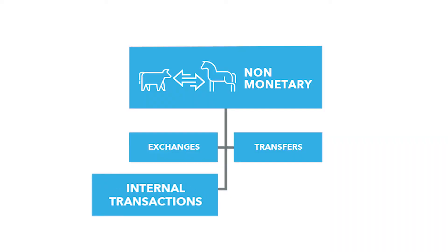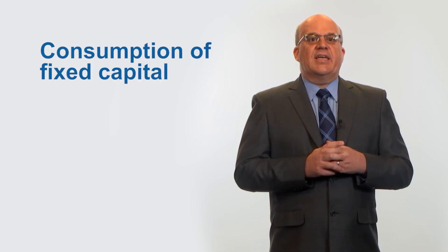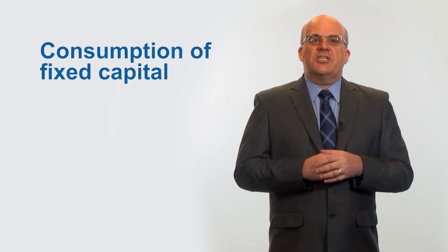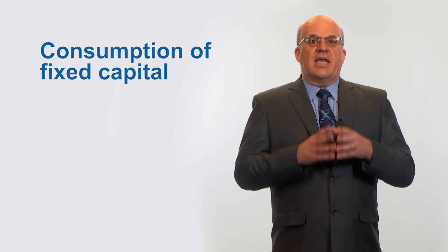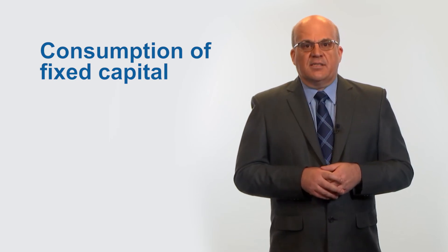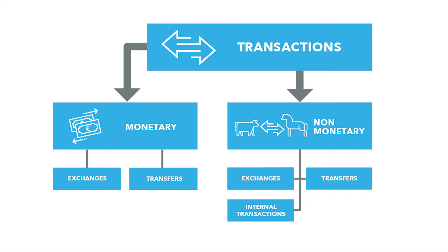Internal transactions occur when a single institutional unit acts in two different capacities, and it is analytically useful to record this act as a transaction. The most common example of an internal transaction is what we call consumption of fixed capital. This entry can be viewed as the macroeconomic version of the depreciation of assets. In this case, the economic owner of the assets acts in two capacities: as the owner and the user of the assets.